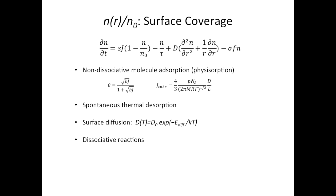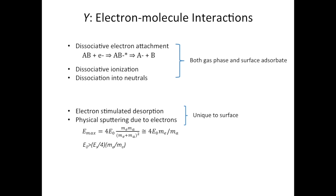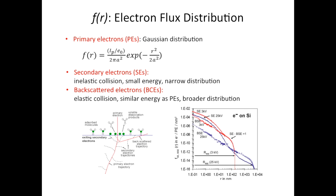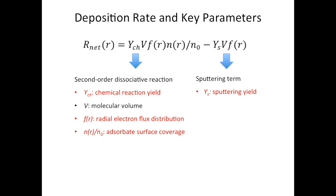And if we put the surface coverage, the yield, and the electron beam distribution together into the general expression, we can get the deposition rate. This is all about my presentation. Thank you.